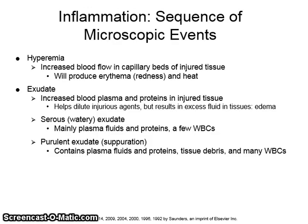Hyperemia is an increase in blood flow that fills the capillary beds in the injured tissue. Hyperemia results in erythema, or redness, and heat. During hyperemia, the permeability of the blood vessels of the microcirculation also increases and the blood vessels become leaky. The fluid that escapes is called transudate — the same type of fluid that normally supplies oxygen and nutrients to the cells. When this fluid is lost, blood viscosity increases, the blood becomes thicker, and as blood flow slows, red blood cells begin to pile up in the center of the blood vessels and the white blood cells are displaced to the periphery. This movement is called margination.